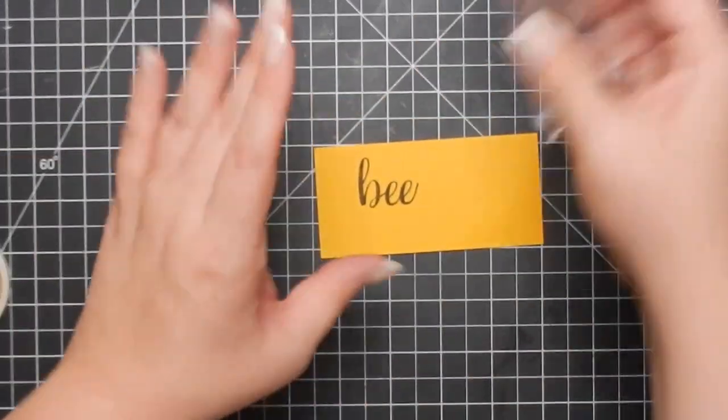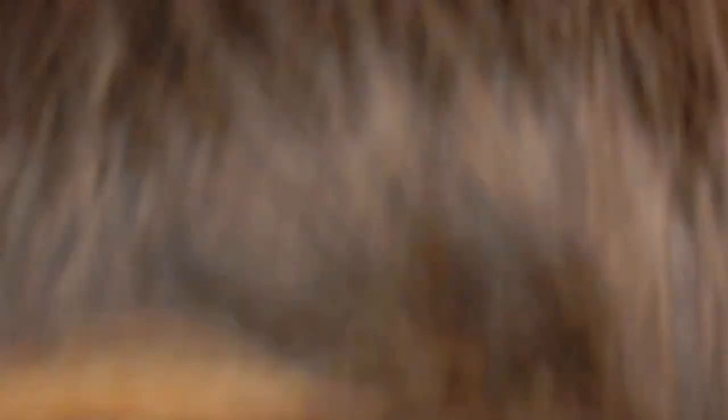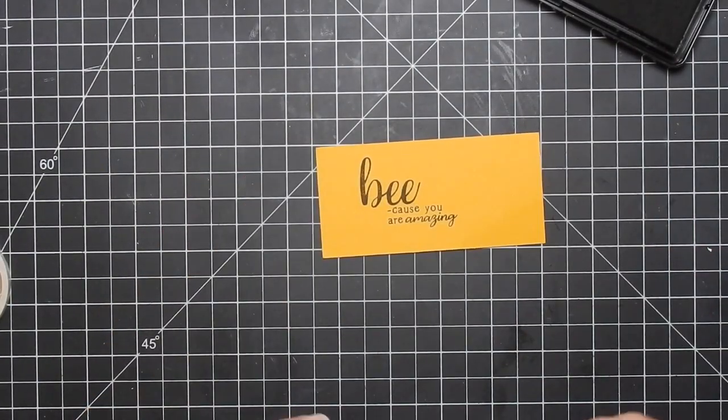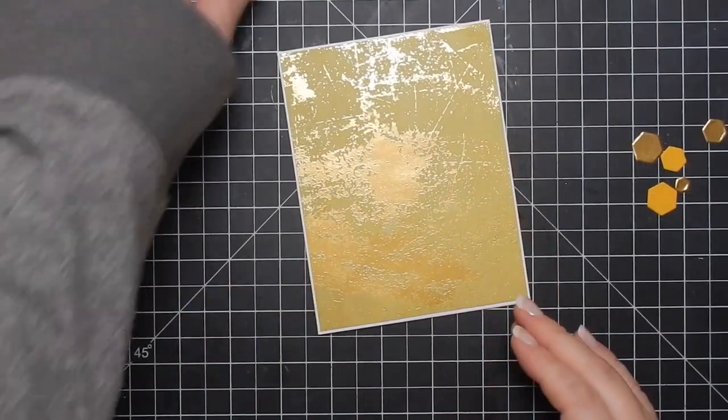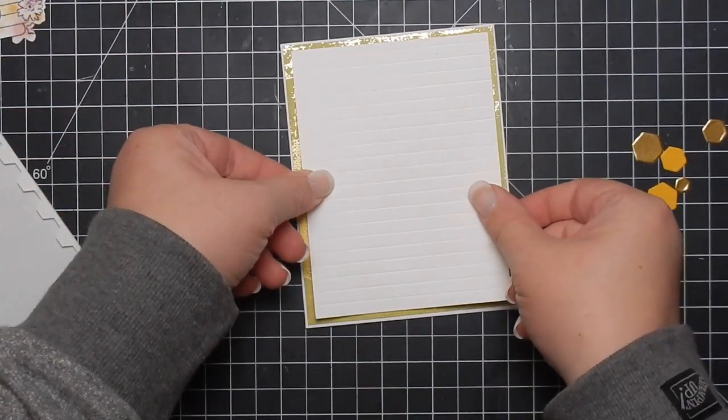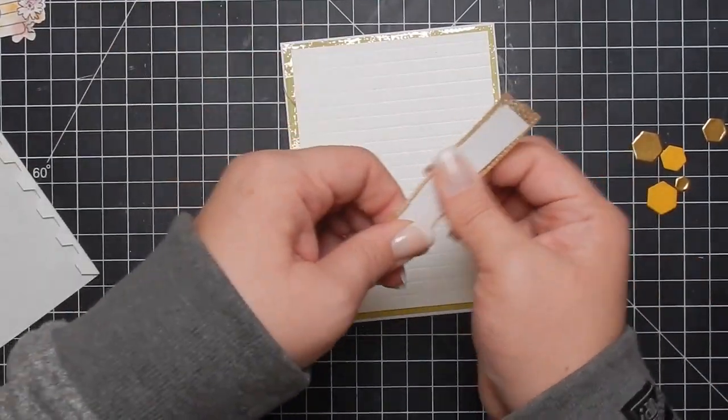Here I'm taking some crushed curry cardstock and I'm stamping out the sentiment because you are amazing. It is a buildable sentiment stamp set so you can do a lot of different sentiments.